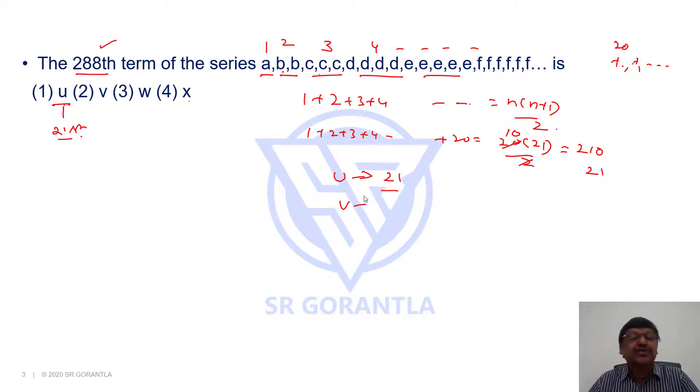Even v is not sufficient because v is 22nd letter. We write it 22 times. 210 plus 21 plus 22. It is still not sufficient.